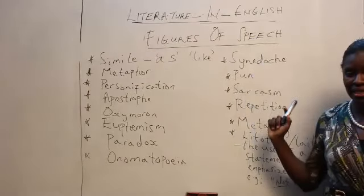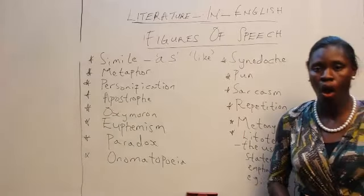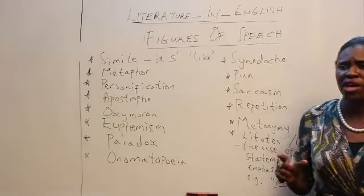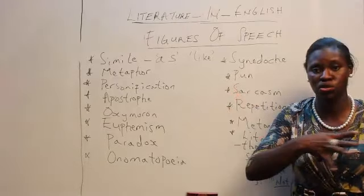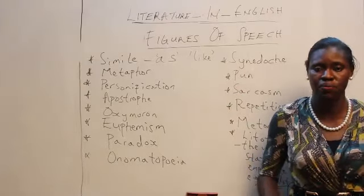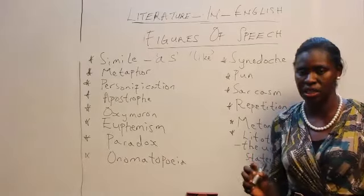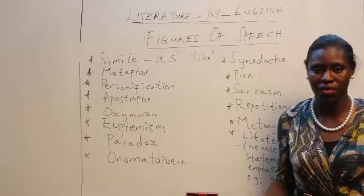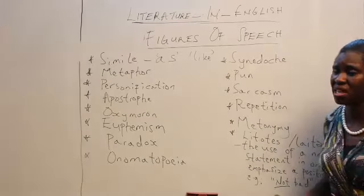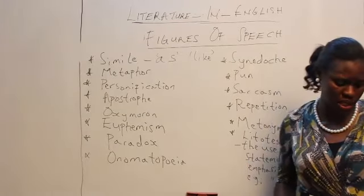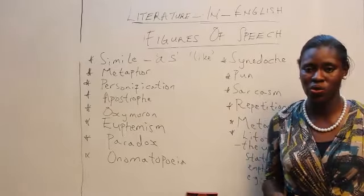Synecdoche is also a figure of speech. Synecdoche uses a part to represent a whole or a whole to represent a part. For example, 'many hands on deck' — you are using the part of the body, 'hand,' to refer to people actually working on something. 'The woman is poor and she has so many mouths to feed' — 'mouths' is used to represent children. 'All eyes on me' — 'eyes' represents the people present.